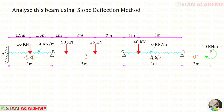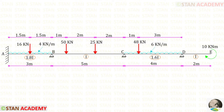Hello everyone. Today we are going to analyze this beam using the slope deflection method. Before analyzing, let us see the beam one time. In this beam there are three spans AB, BC and CD. Also we have an overhanging portion DE.